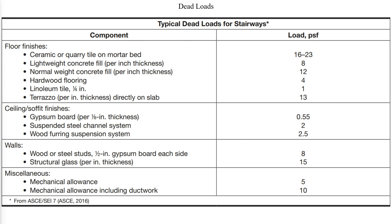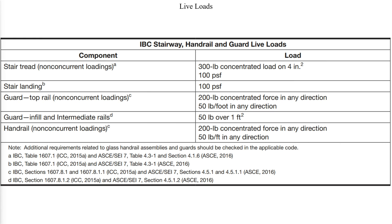The following table includes typical components that are additive to the stairway self-weight. IBC Chapter 16 and ASCE 7 Chapter 4 provide the typical live loads to be used. Both the concentrated loading and uniform loading should be checked; however, per IBC, these loads are not meant to be used together and the most severe loading should be used for design. Factory, industrial, and storage occupancies in areas not accessible to the public and serving an occupant load not greater than 50 are excluded from the uniform live load for guards.